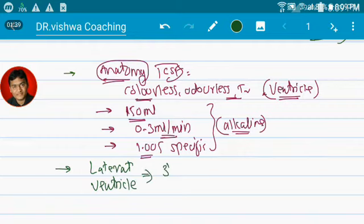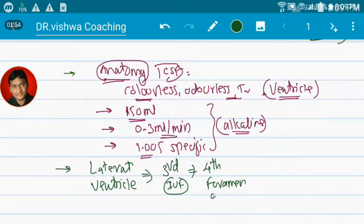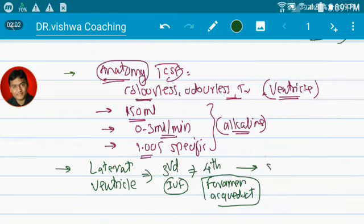Then it goes to third ventricle through interventricular foramen, then it goes to fourth ventricle through the aqueductal foramen, then it goes to the subarachnoid space through the foramen of Luschka and the foramen of Magendie, and then it is reabsorbed.